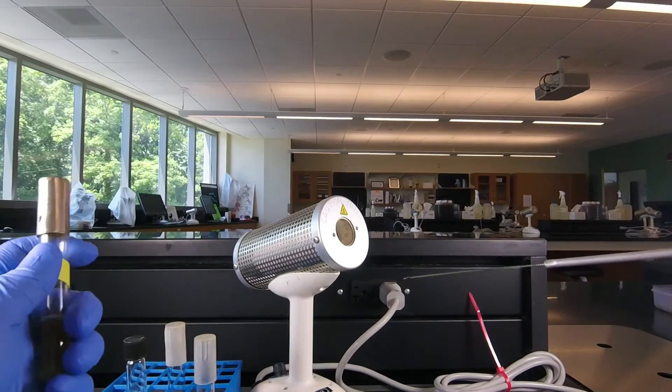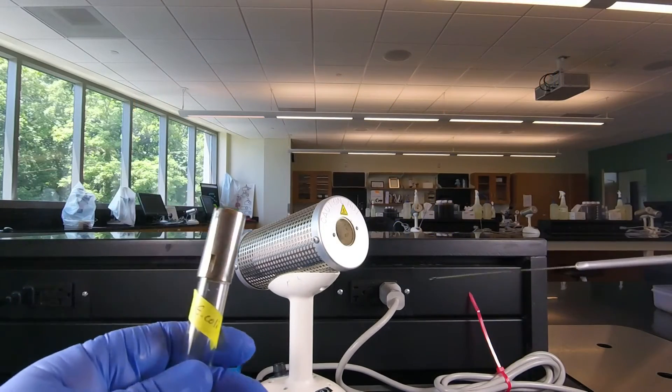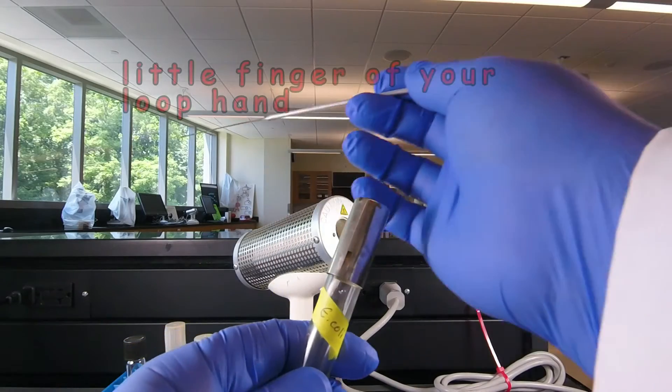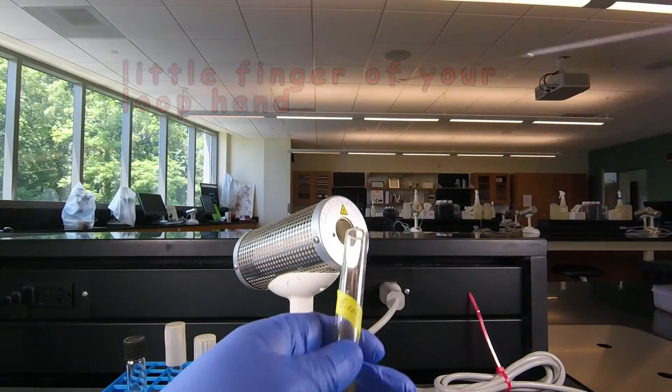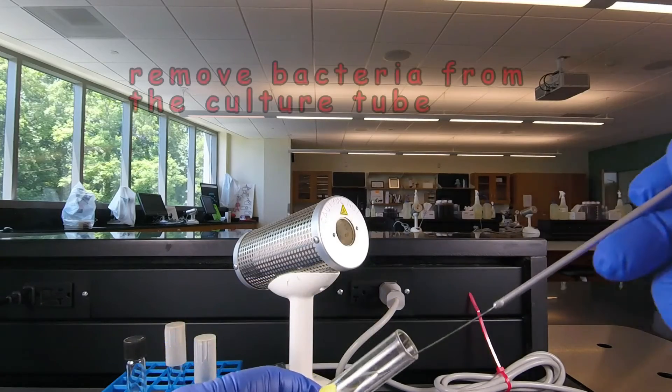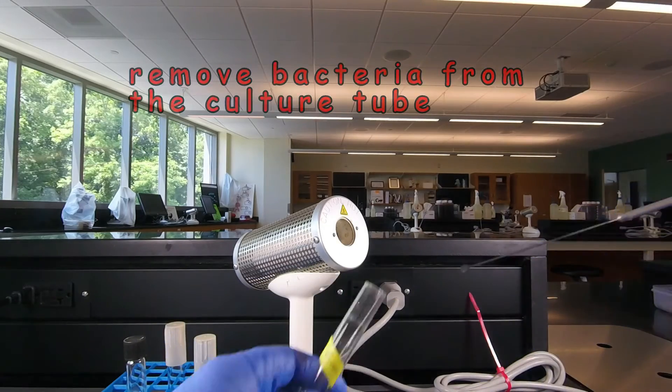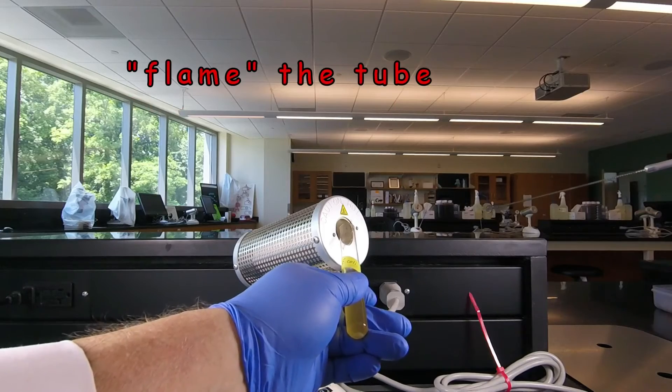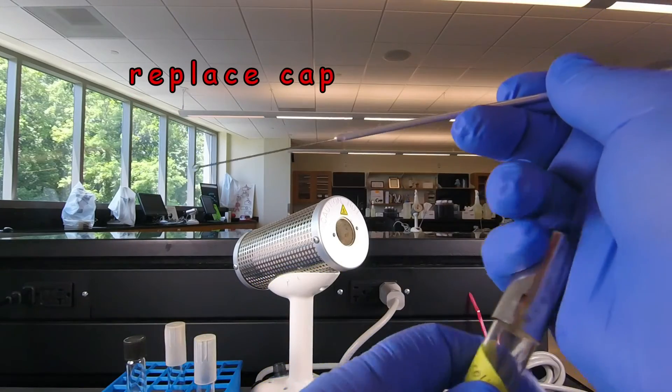Take the tube of bacteria we want to grow, our pure culture, in this case it's E. coli again. Remove the cap with the little finger. Flame the tube for three seconds. Remove a loop full of the E. coli. Flame the tube for three seconds. And replace the cap.